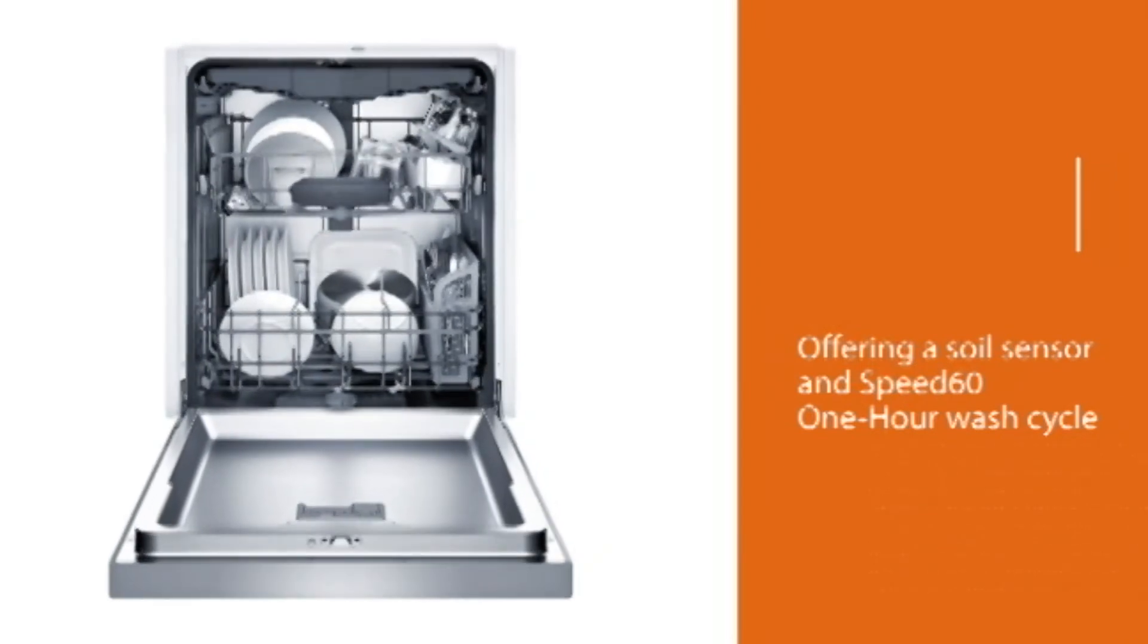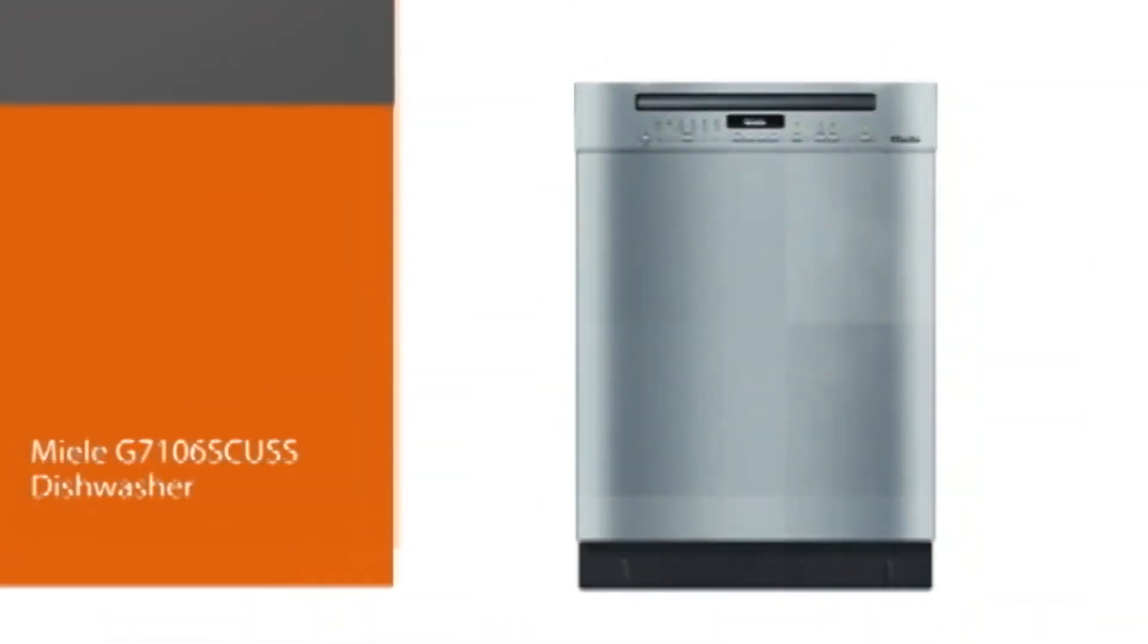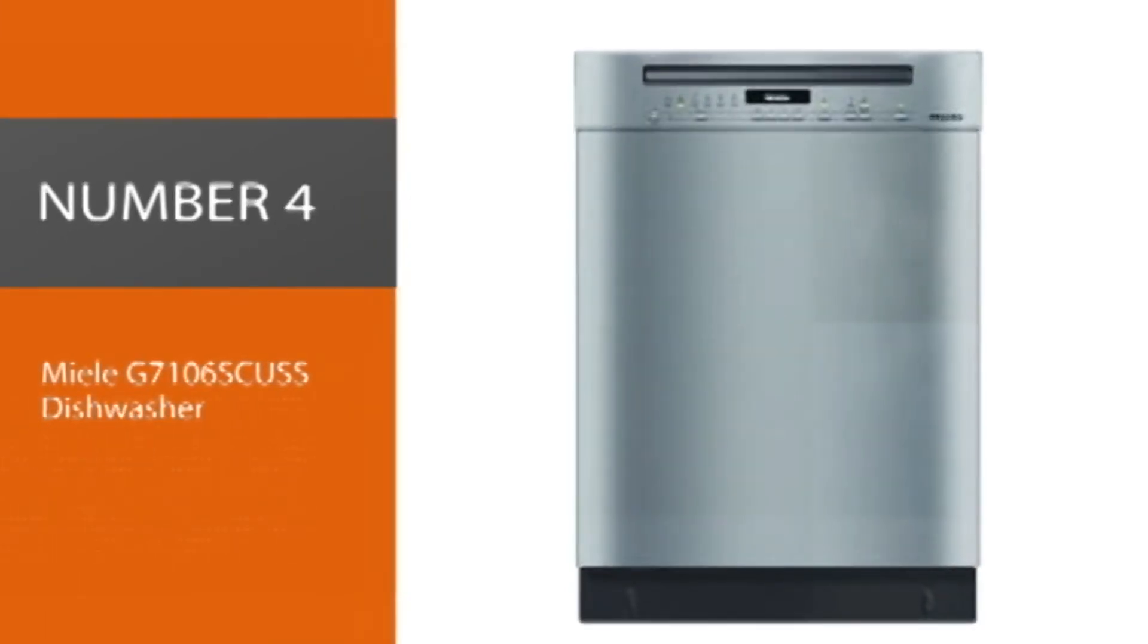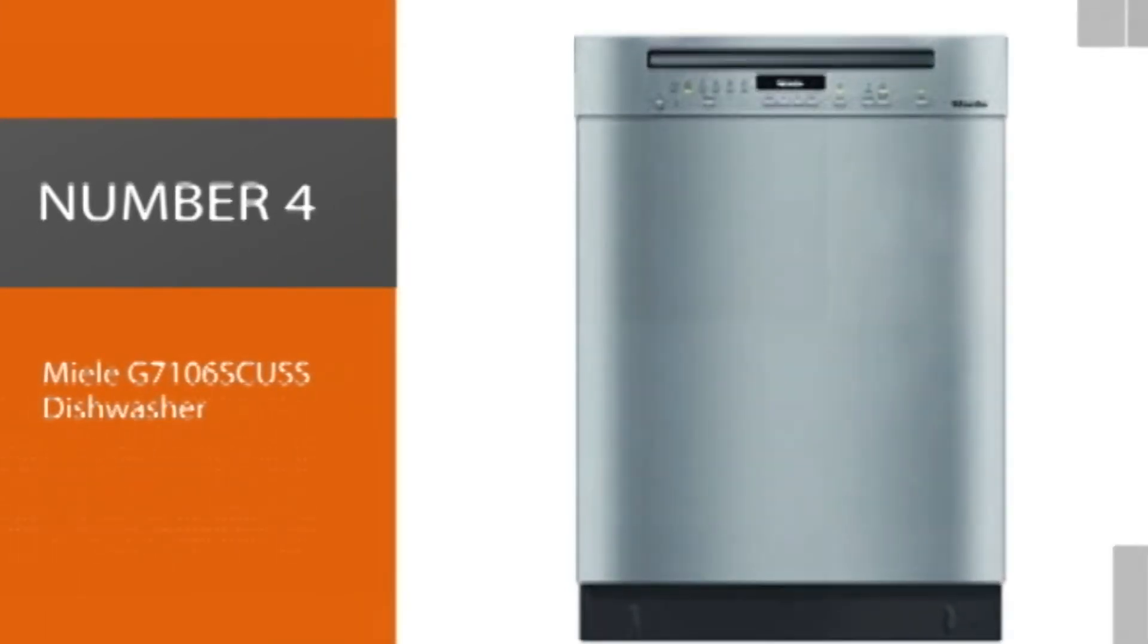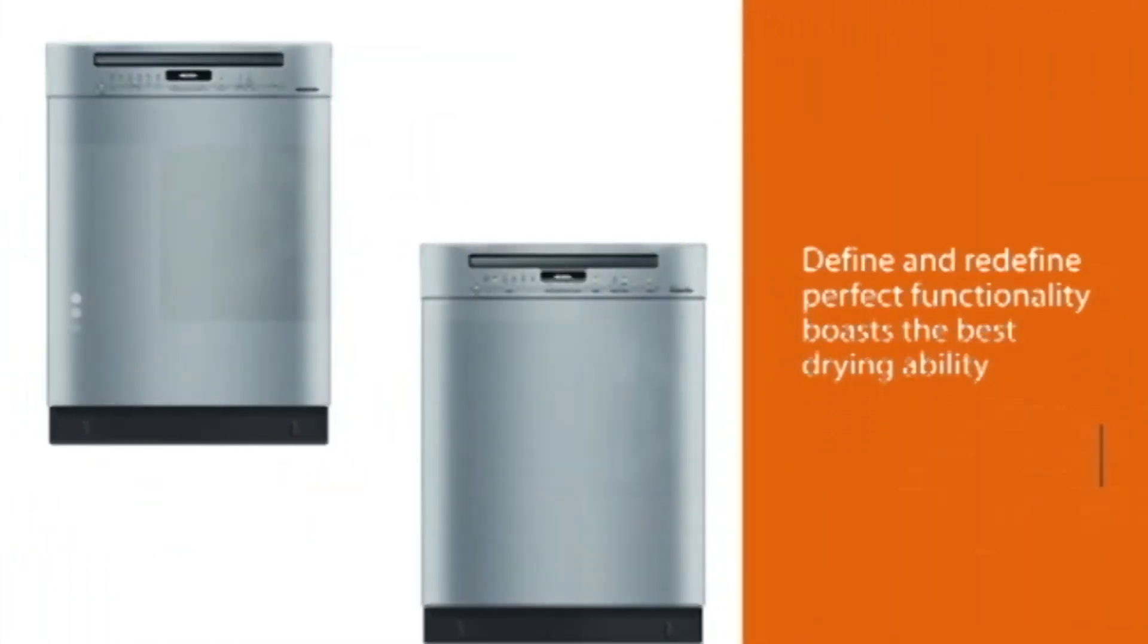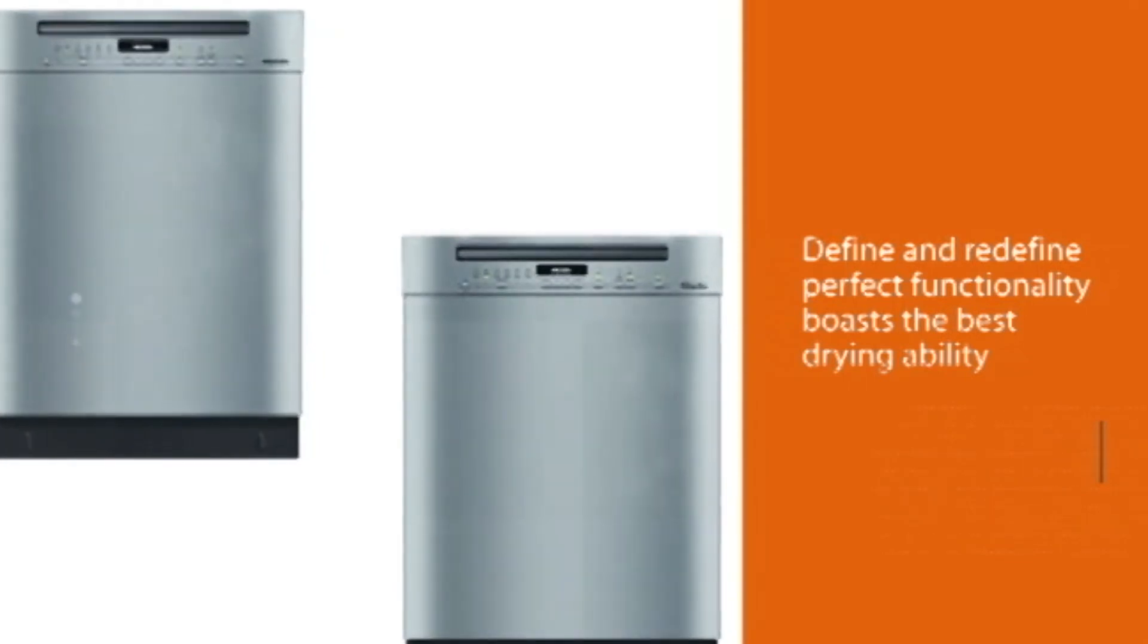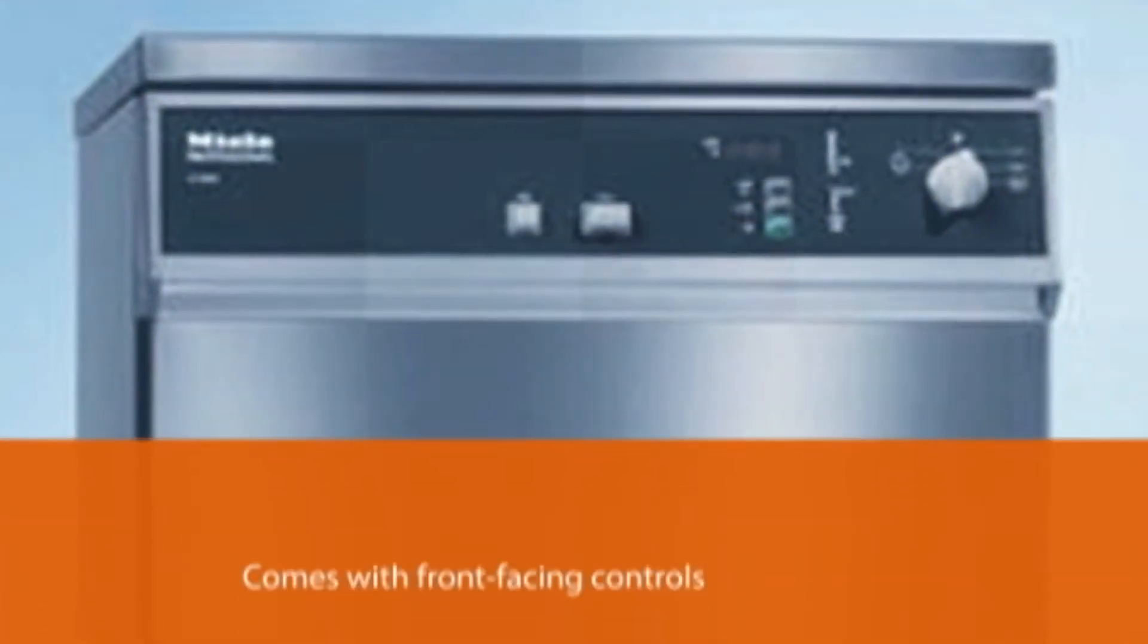Number 4, Miele G7106 SCUS Dishwasher. Miele dishwashers consistently define and redefine perfect functionality. This model is from the most recent G7000 series. It boasts the best drying ability on the market, plus a whole lot more.